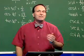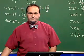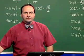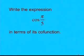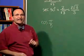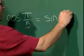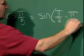In our next example, we will write an expression in terms of a co-function. So, our example then is, write the expression cosine of pi over 5 in terms of its co-function. So, we have cosine of pi over 5. And what we know is cosine and sine are co-function. So, this would be the sine of pi over 2 minus pi over 5.